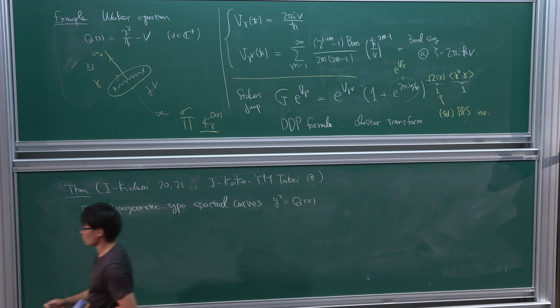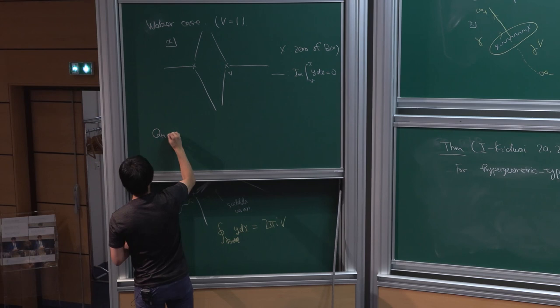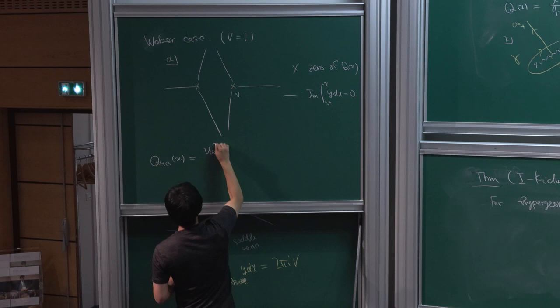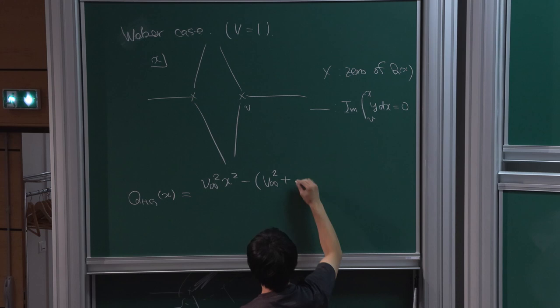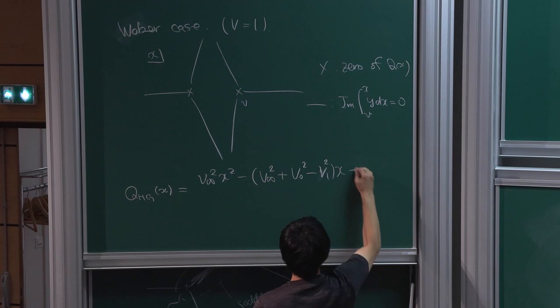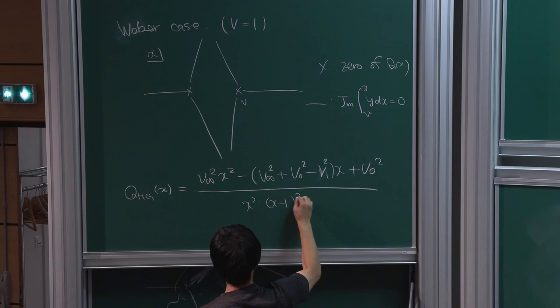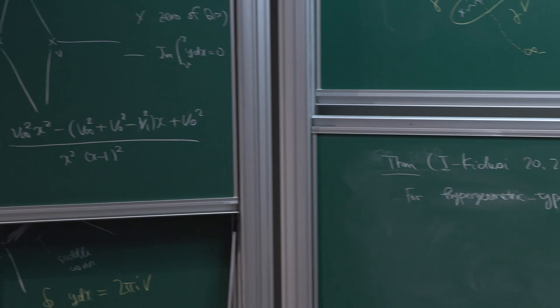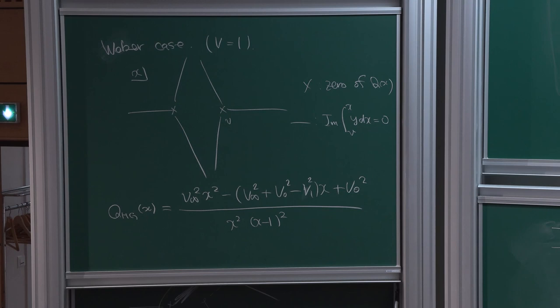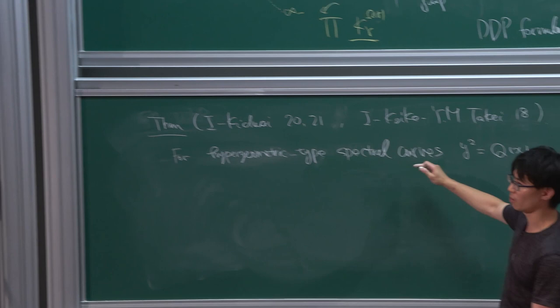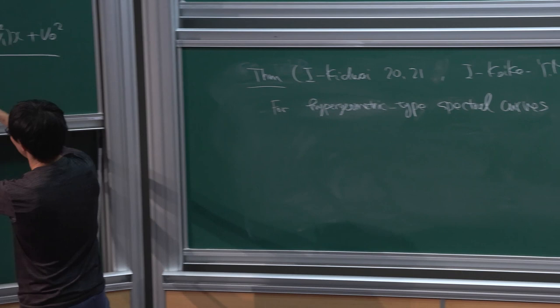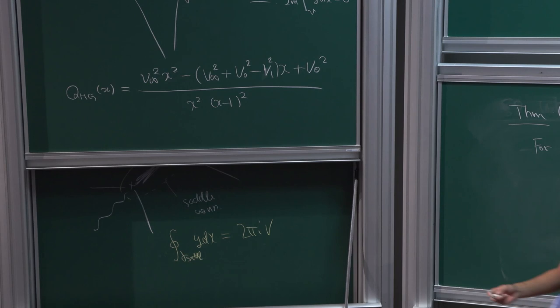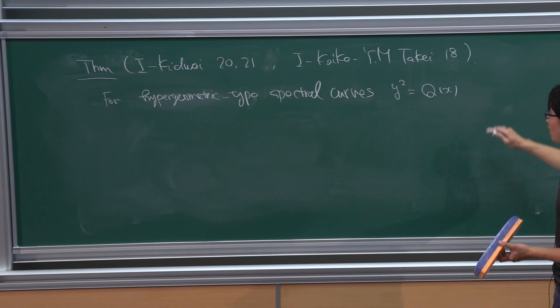The most general hypergeometric spectral curve contains three parameters alpha, beta, gamma — corresponding to the Gauss hypergeometric equation. We also discuss spectral curves obtained by confluence limits of hypergeometric differential equations: colliding poles, zeros, and so on. In total there are eight examples of hypergeometric-type spectral curves. For all of these we have the following results.